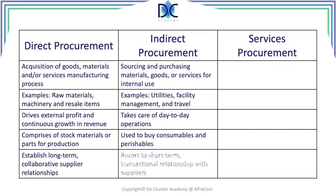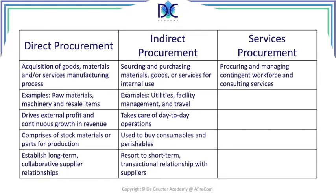In indirect procurement, we use them to buy consumables and perishables — typically things used to keep processes running. We typically look at short-term transactional relationships with suppliers, though longer-term relationships are possible. It's not as dramatic to change a supplier compared to direct procurement.